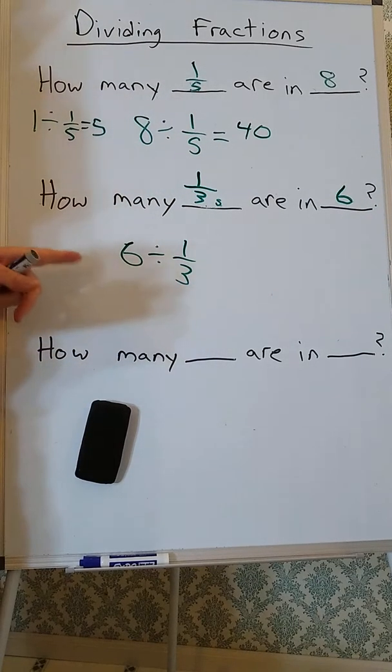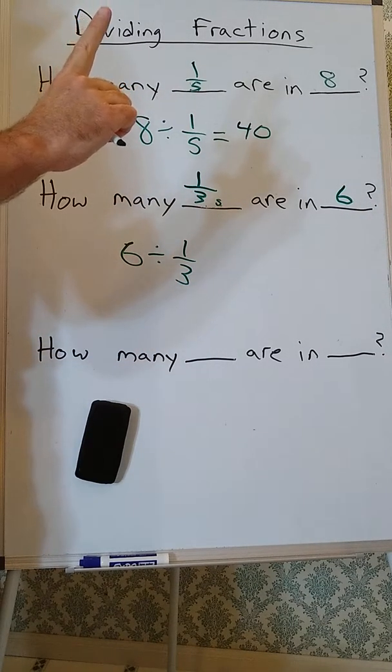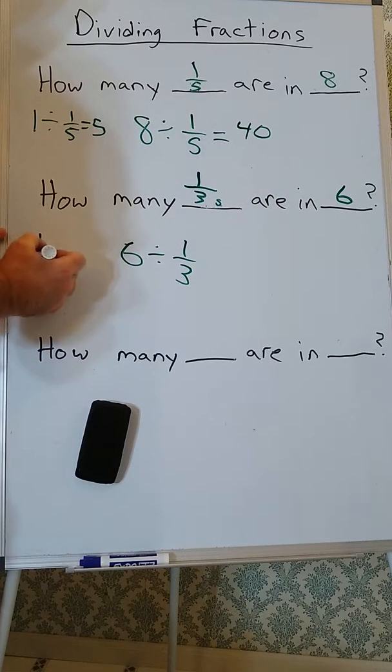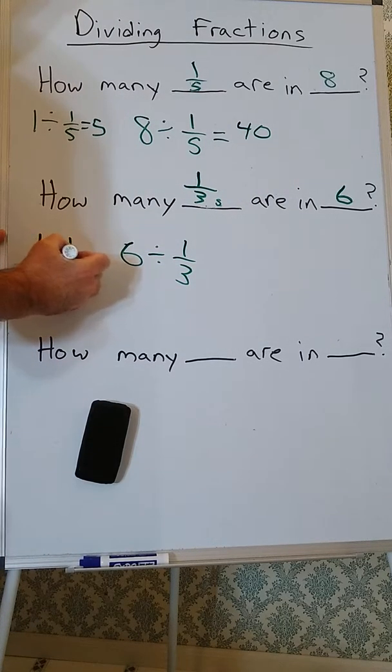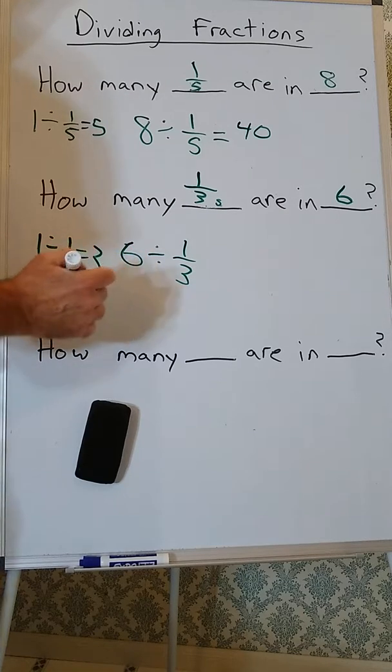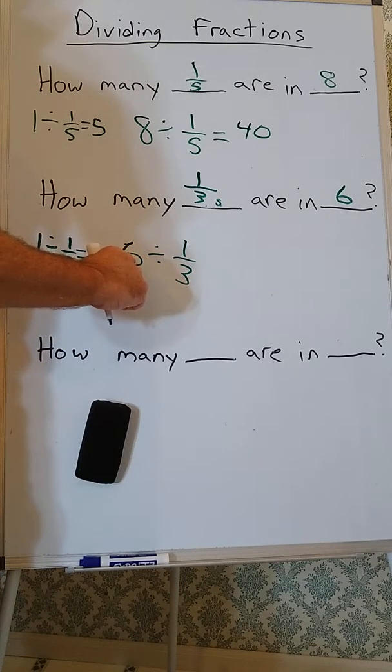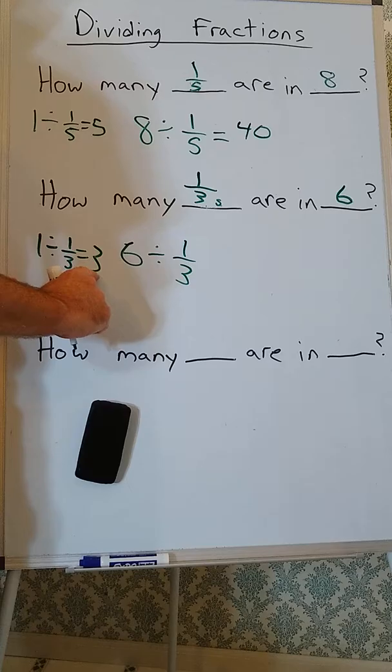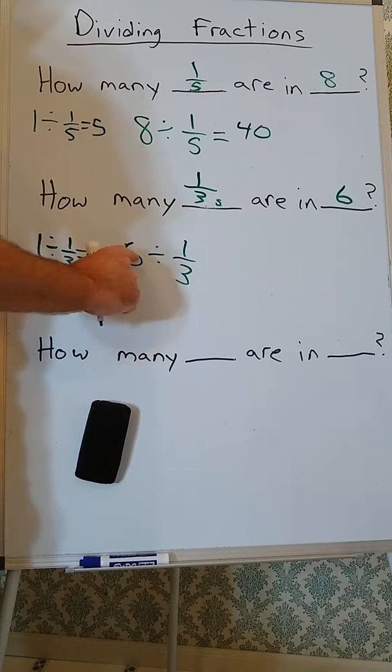Well, how many thirds are in 1 whole? Well, there will be 3. 1 divided by 1 third is 3. So, each of these 6 wholes will have 3 thirds. And we have 6 of them.